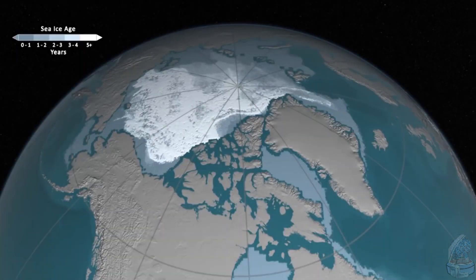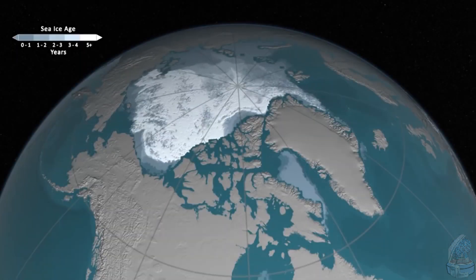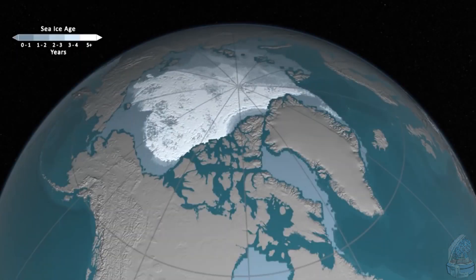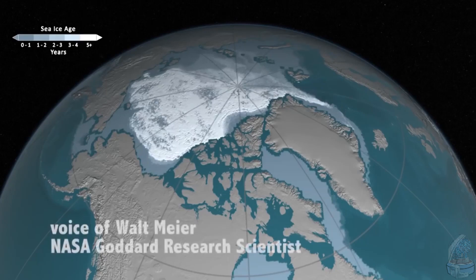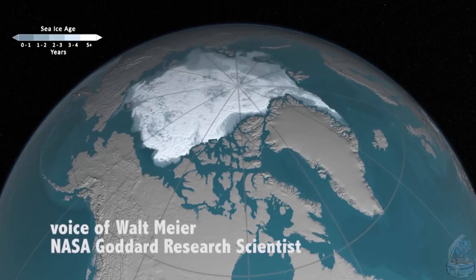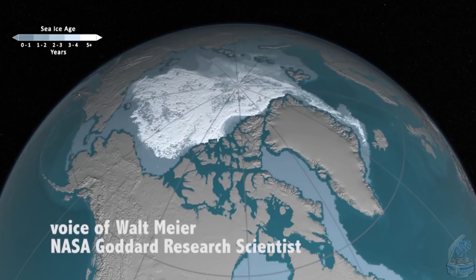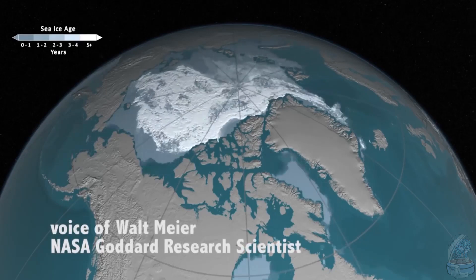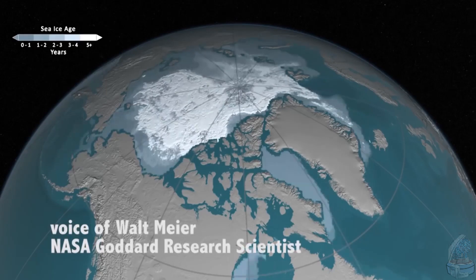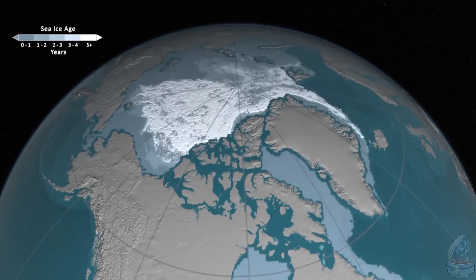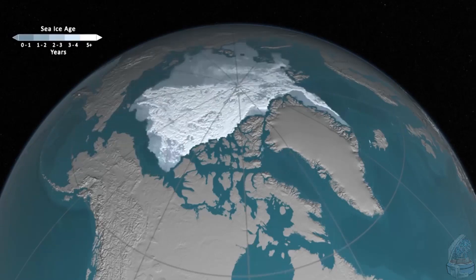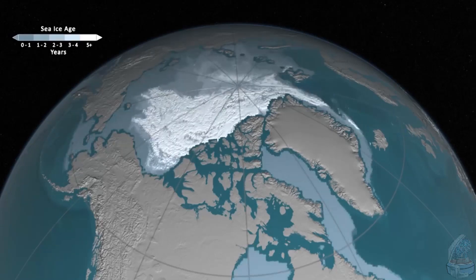In this animation, we're taking Arctic sea ice into the third dimension. Here, we're looking at the ice age, which is an indicator of thickness. Generally, older ice is thicker ice.